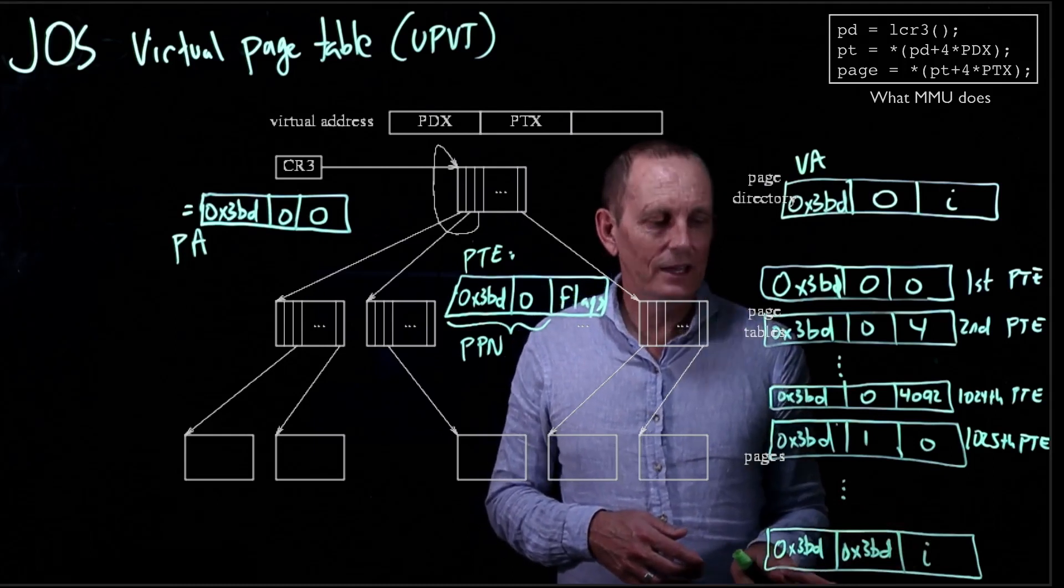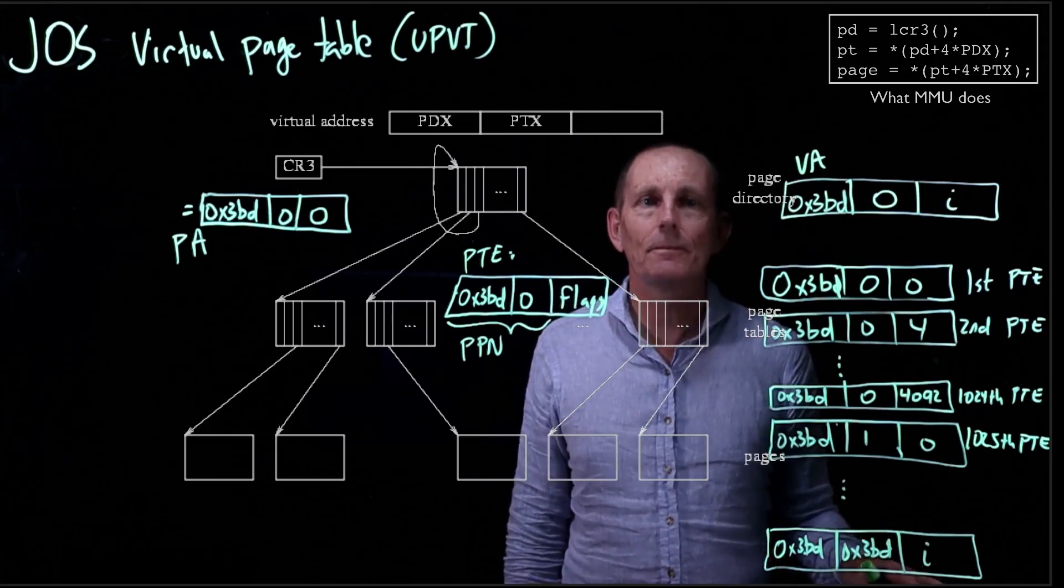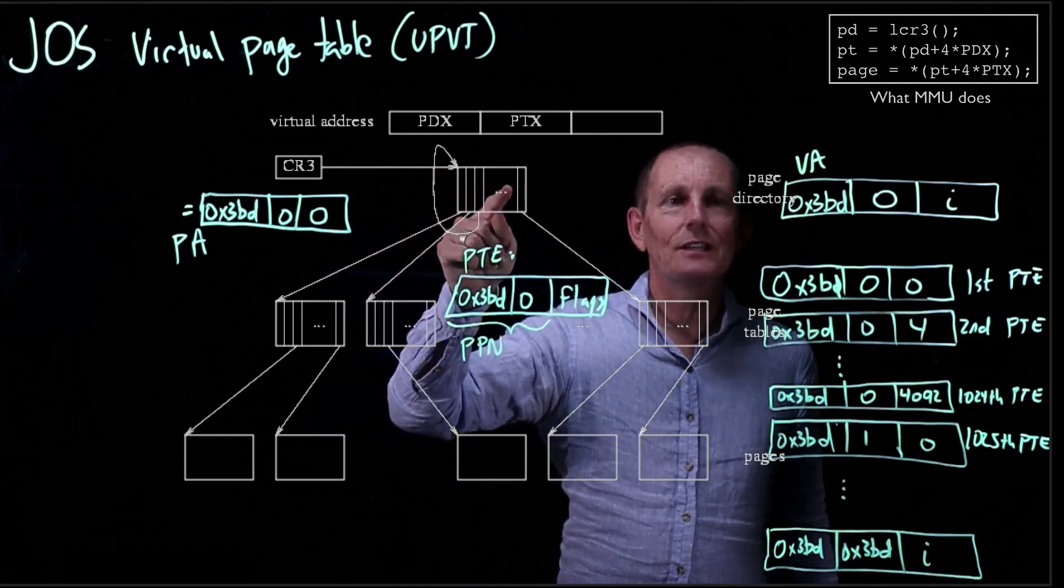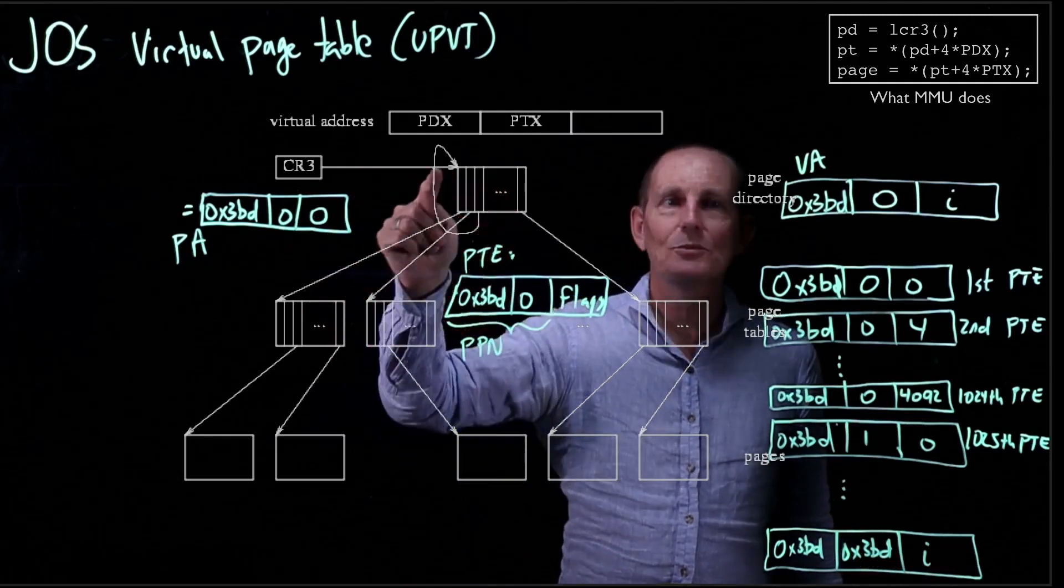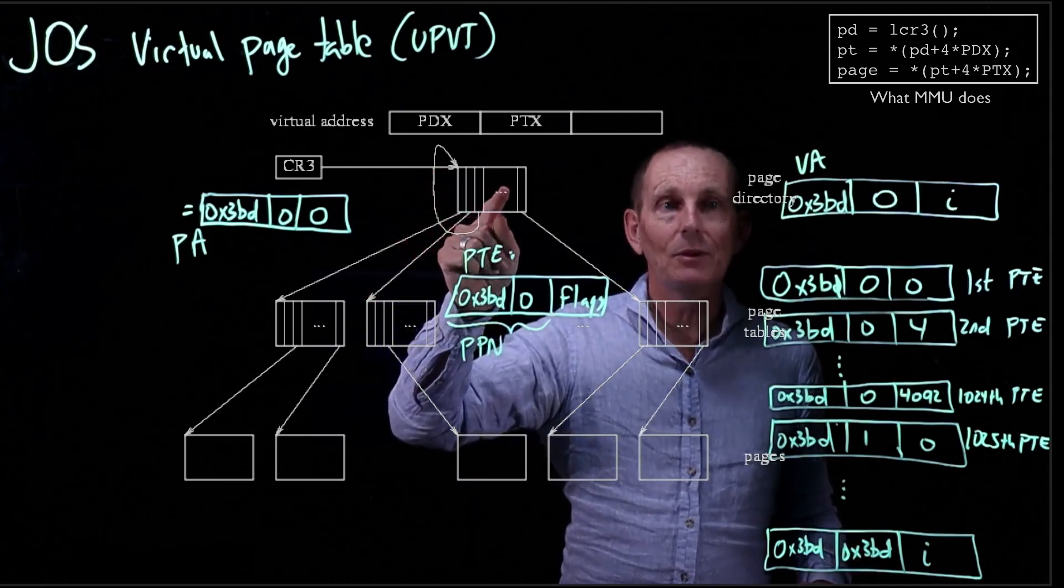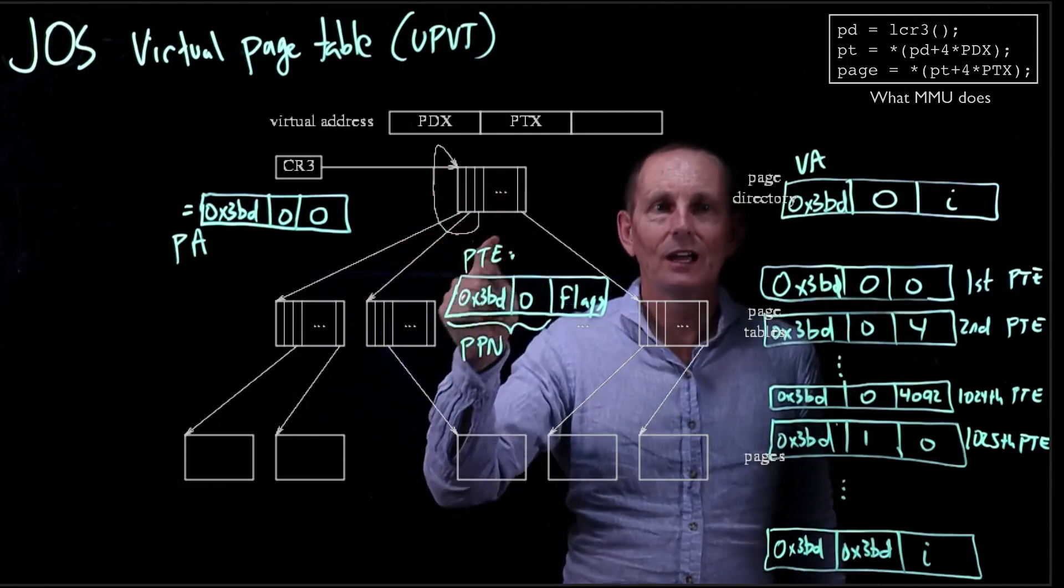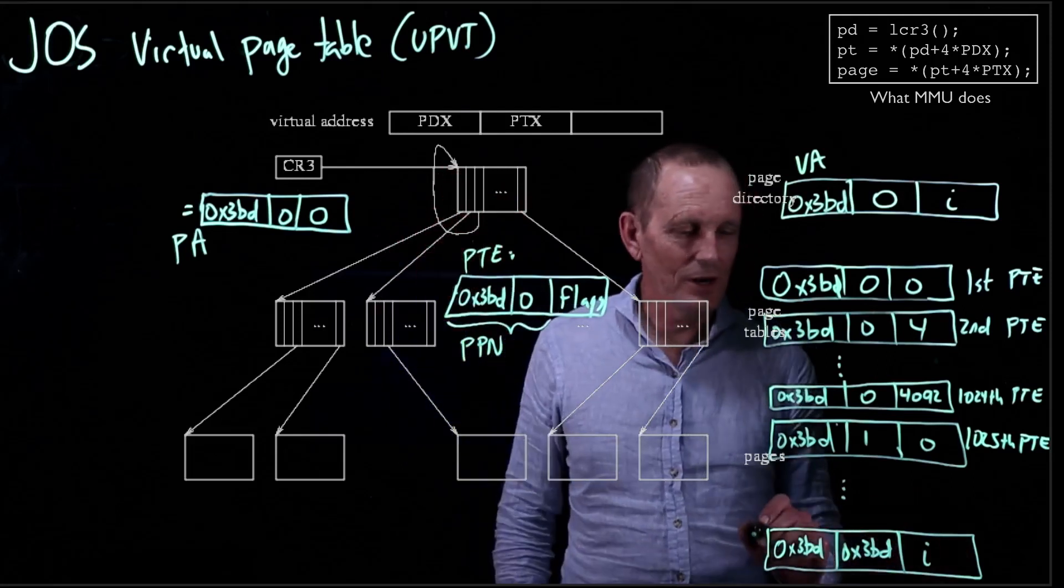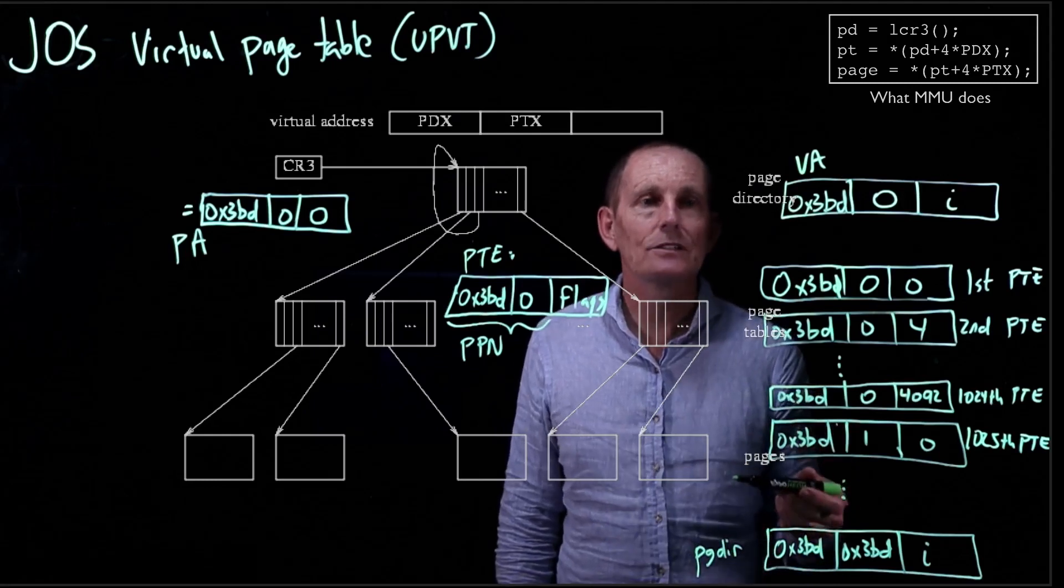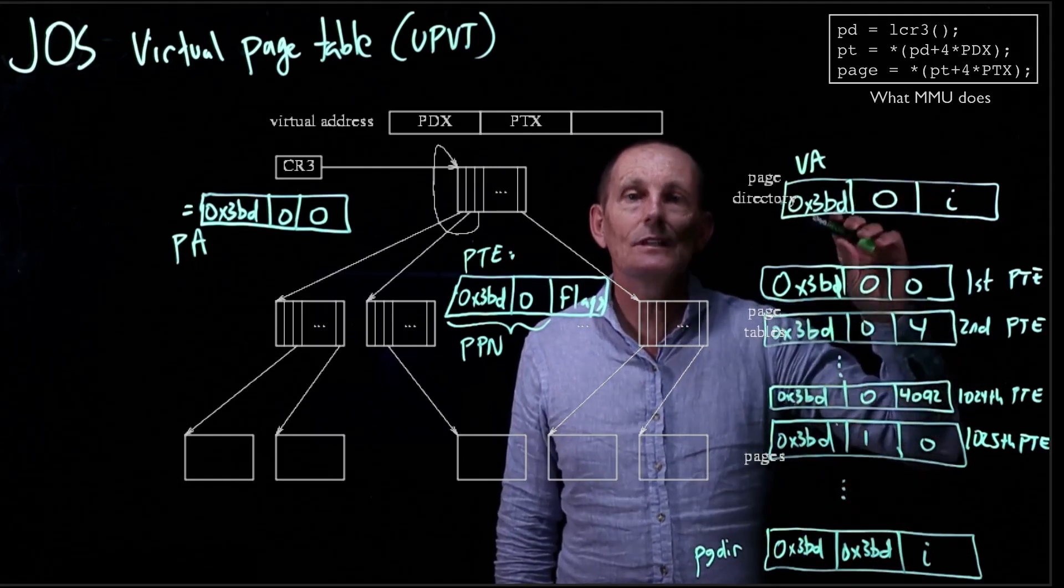So what happens at 0x3BD for the page directory index, 0x3BD for the page table index, and then some offset? So we go here. We go to the 0x3BD entry in here in the page directory. And that takes us back to this page table. And now we go to the 0x3BD entry again in this page table. And that will give us a page table entry with the same value. And that will take us back to here. So this part is actually the page directory. So we have a virtual address for the page directory. And we have a virtual address for all of the page tables contiguously.